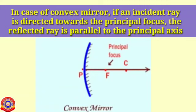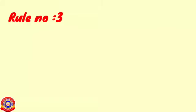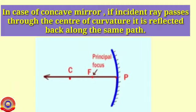In the case of a convex mirror, if an incident ray is directed towards the principal focus, the reflected ray is parallel to the principal axis. Rule number three: in the case of a concave mirror, if an incident ray passes through the center of curvature, it is reflected back along the same path.